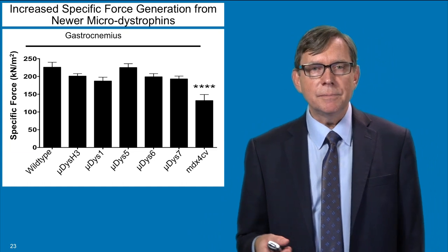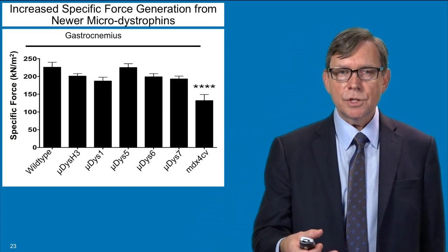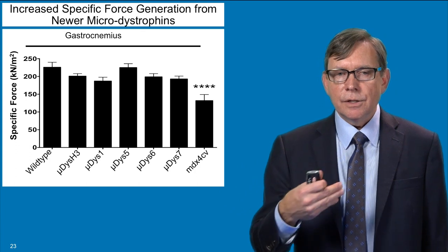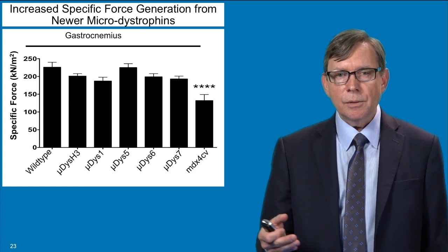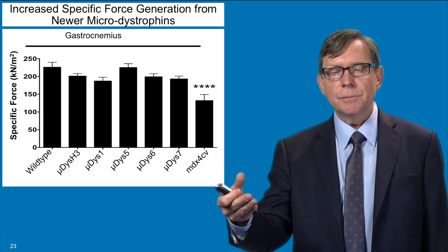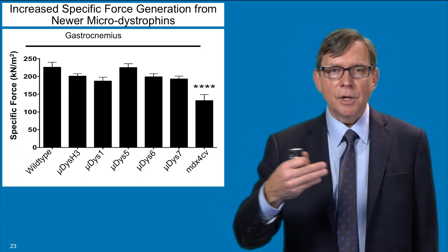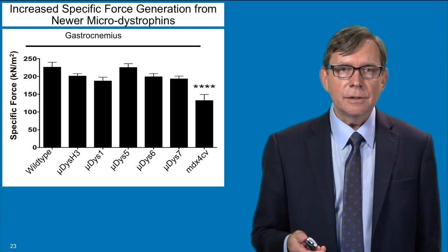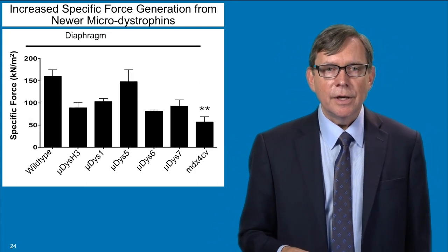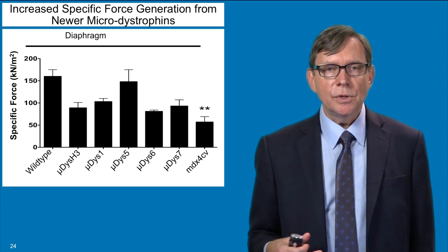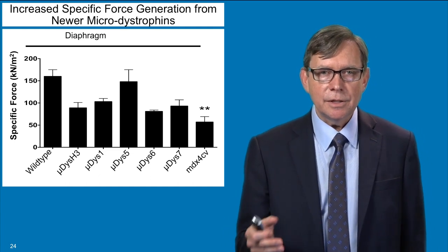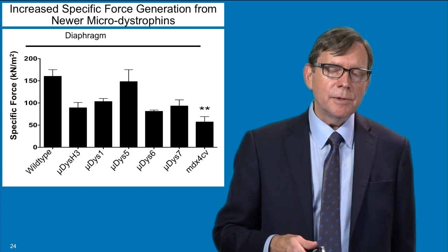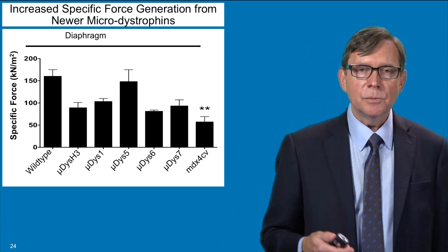Here's another example of a type of assay. We talked about specific force generation in the muscles as an indication of their strength. This is a panel looking at different micro dystrophins and comparing them to wild type animals and MDX animals, which is the mouse model for Duchenne. Different micro dystrophins have different abilities to develop strength — this is in the gastrocnemius, the lower leg muscle. We can also look at the diaphragm. In particular, one of these constructs referred to as micro dystrophin V seems to be performing better than the others both in terms of force generating capacity in the limb muscles and the diaphragm, and that's currently our lead candidate that we're moving forward with.